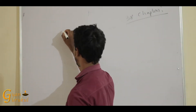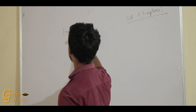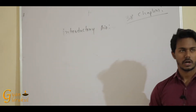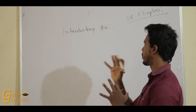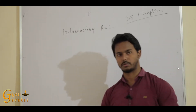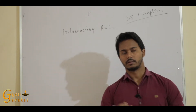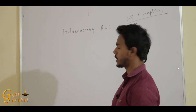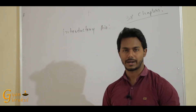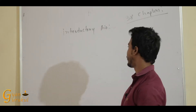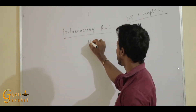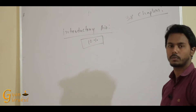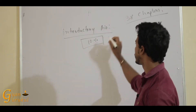Introductory biology is the first portion. The first chapter covers the Living World, Biological Classification, Plant Kingdom, and Animal Kingdom. These are the basic chapters. On average, this chapter section follows the standard pattern and is the weightiest in terms of frequency. It accounts for 10% of total marks — that is, out of 360 marks, about 36 marks come from this section.